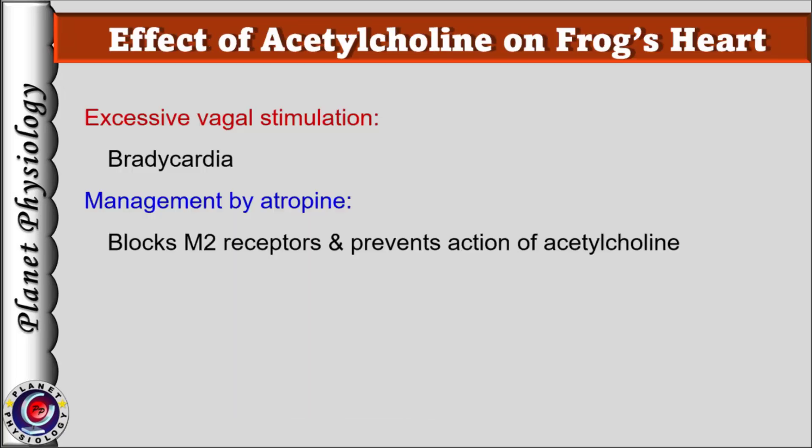Now let's see the clinical application of this knowledge. Excessive vagal stimulation causes bradycardia, or sometimes the heart can momentarily stop, leading to fainting. It can be treated with atropine, a muscarinic antagonist — that is, a muscarinic receptor blocker. As M2 receptors are blocked by atropine, despite vagal stimulation, acetylcholine cannot act on the heart to induce bradycardia. Thus, understanding acetylcholine's effect on the heart aids in managing such conditions.